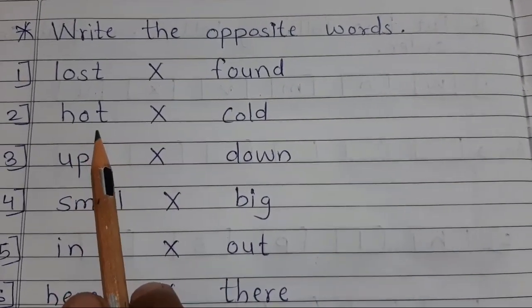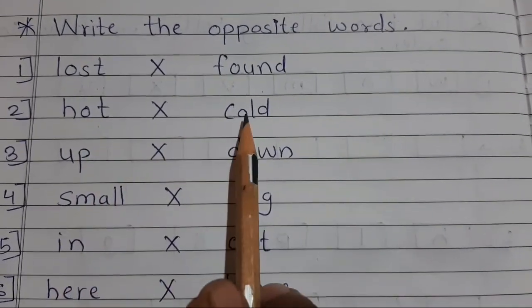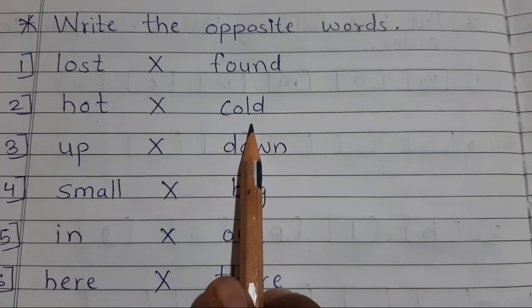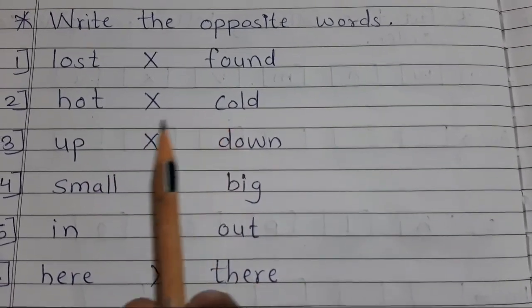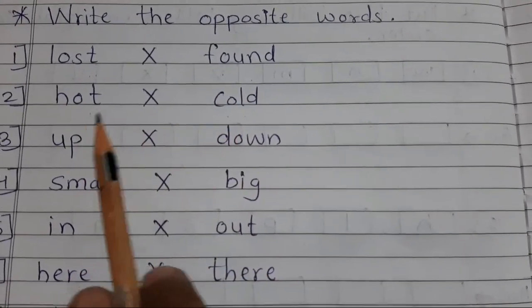Second is H-O-T hot. Hot opposite C-O-L-D cold. Hot means garam. Cold means thanda. Garam, thanda. Hot, cold.